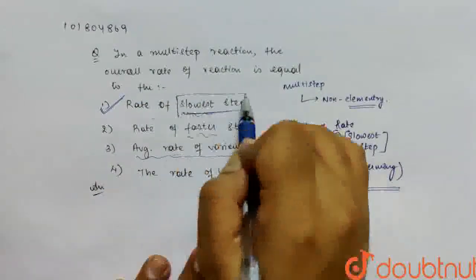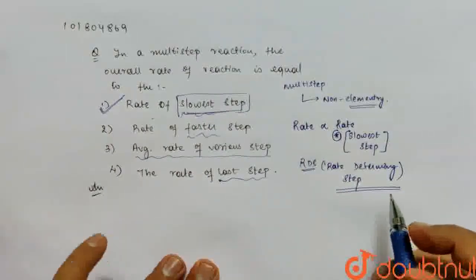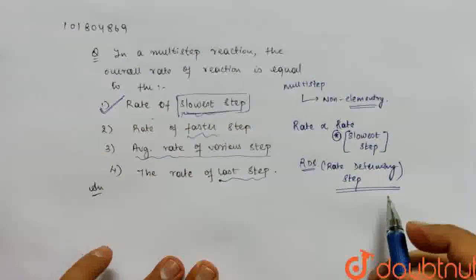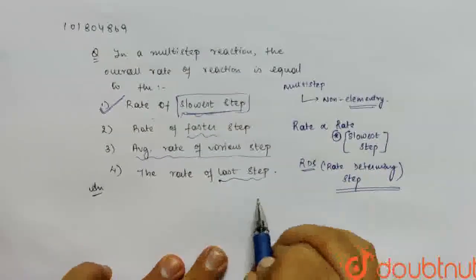Rate determining step happens... If we try to understand the example, here we will try to understand the photo halogenation reaction.